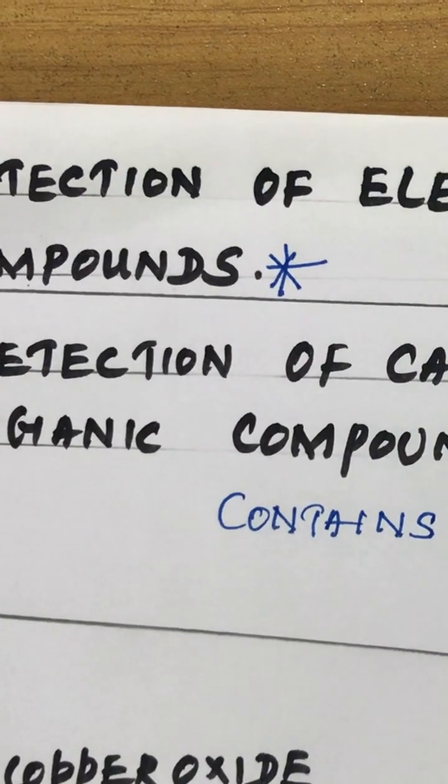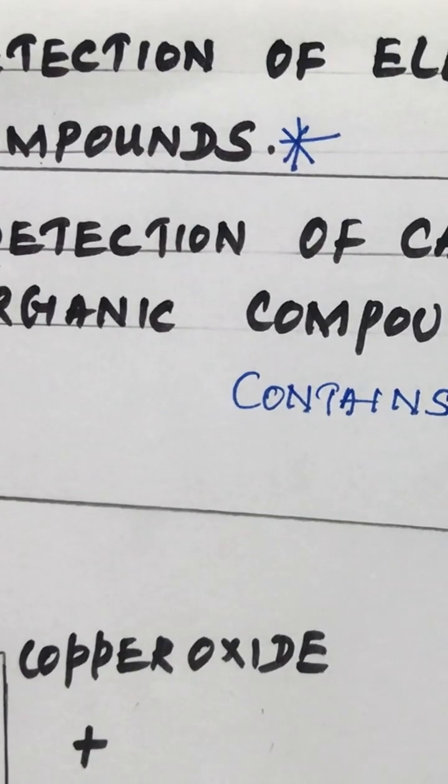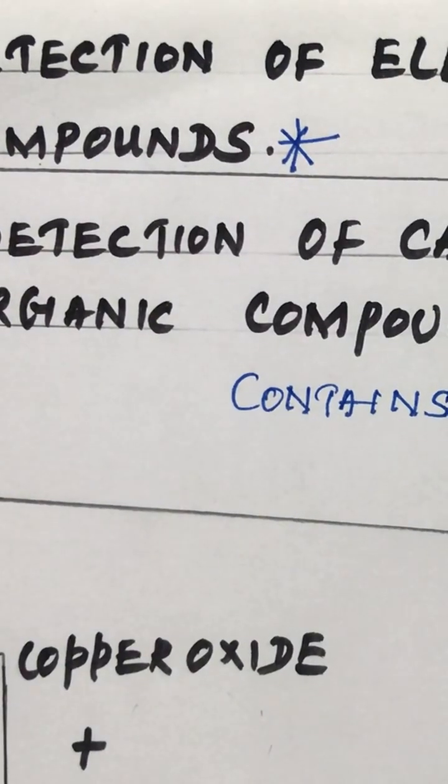Detection of elements in organic compounds: detection of carbon and hydrogen in organic compounds. Generally, all carbon compounds and hydrocarbons contain carbon and hydrogen in their structure.